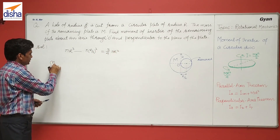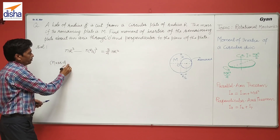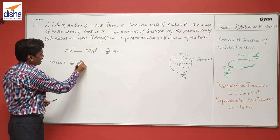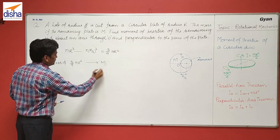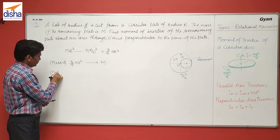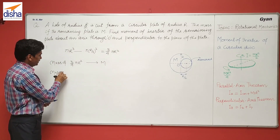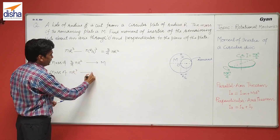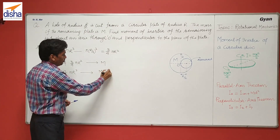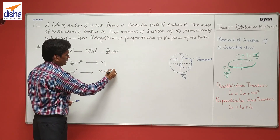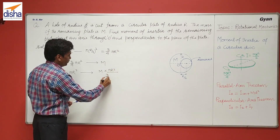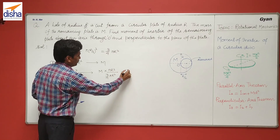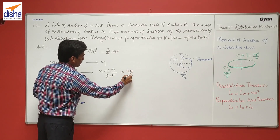The mass of 3/4 pi R squared area is equal to M. So the mass of the original plate, corresponding to area pi R squared, is equal to M times pi R squared divided by 3/4 pi R squared, which gives us 4M/3.